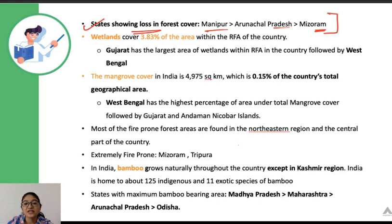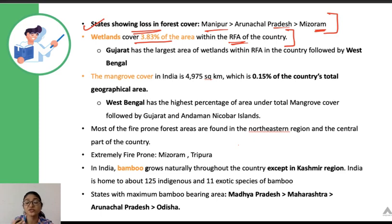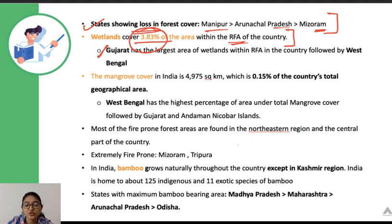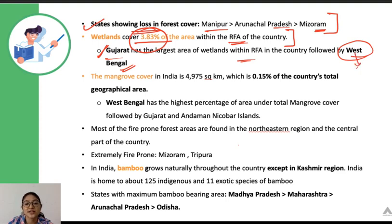Wetland cover accounts for around 3.83% of the total area within the recorded forest area of the country. Gujarat has the largest area of wetland within the recorded forest area, followed by West Bengal. Remember: for wetlands it is Gujarat first, then West Bengal.